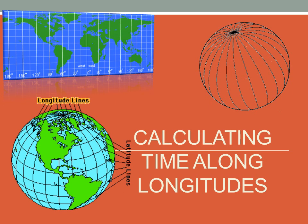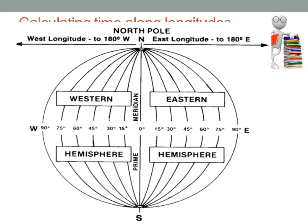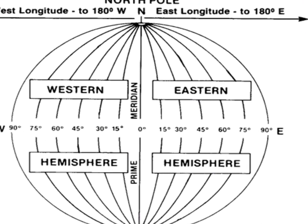Before we begin, let us establish some basic facts about lines of longitude. Lines of longitude, also called meridians or parallels of longitude, run from the north pole to the south pole. The main line of longitude, which is the Greenwich or prime meridian, divides the earth into the eastern and western hemispheres.